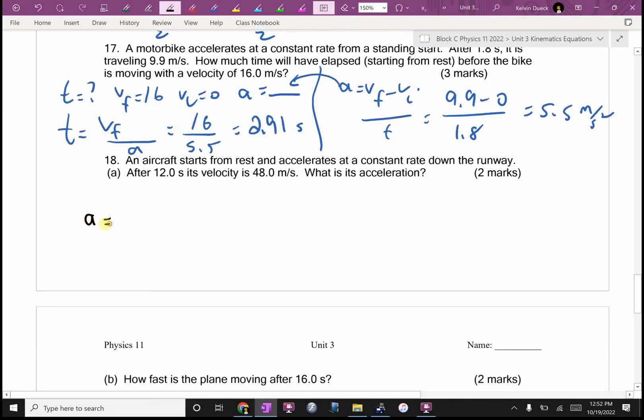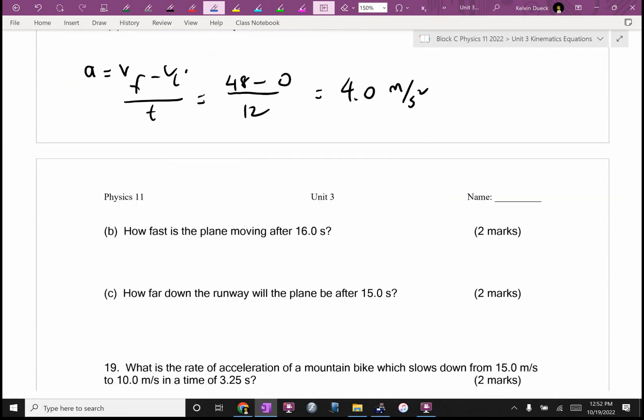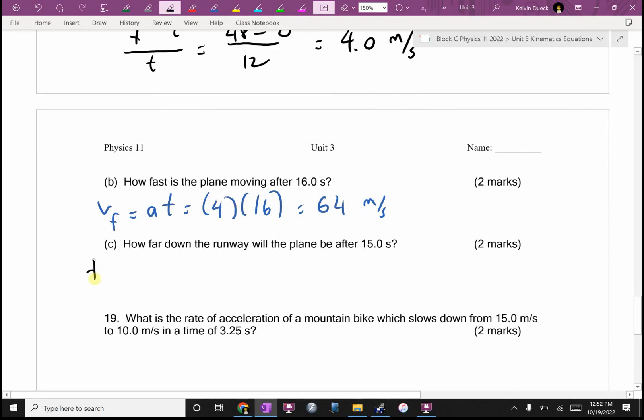What's its acceleration? A equals VF minus VI all over T. What's VI of any aircraft taking off ever? We'll assume that they always come to that stop. So VI is 48, T is 12, so 4 meters per second squared. How fast is the plane moving after 16 seconds? VF equals AT. 4 times 16. 64 meters per second. How far down the runway? D equals VIT plus a half AT squared. 4 times 15 squared divided by 2. 450 meters.